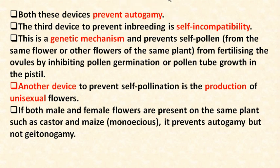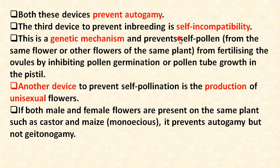The third device to prevent inbreeding is self-incompatibility. This is a genetic mechanism that prevents self-pollen from fertilizing the ovules by inhibiting pollen germination or pollen tube growth in the pistil.